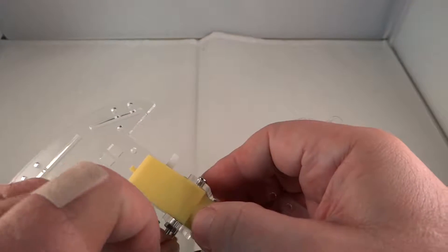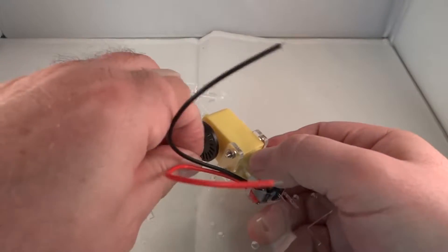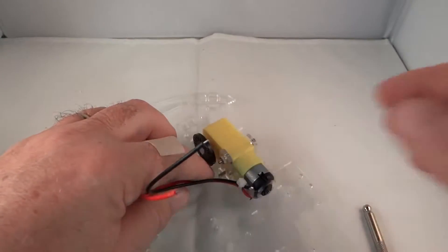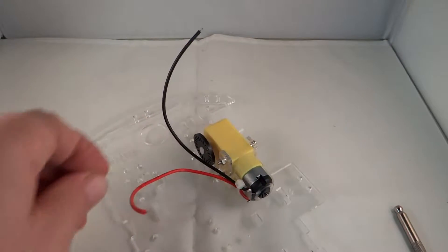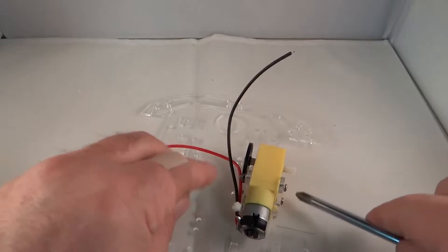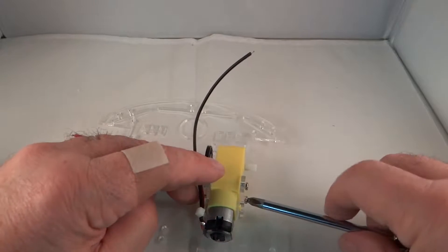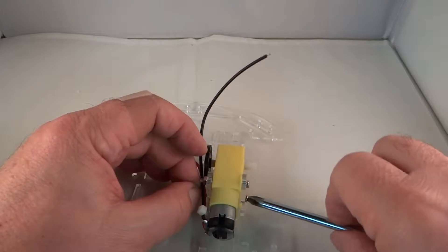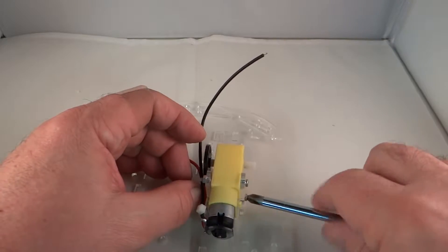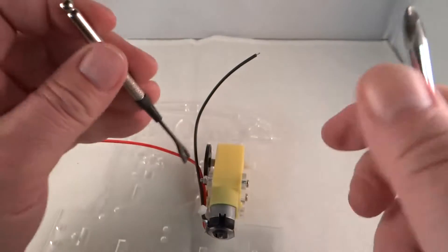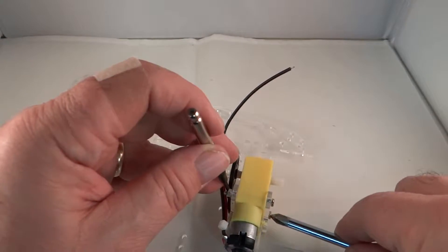We're going to put this bottom one on, which is tricky. I found the best way to get these bottom screws on is to use the screwdriver and then use your fingers to kind of get it started here like this. There we go. And then we can tighten it down like this.